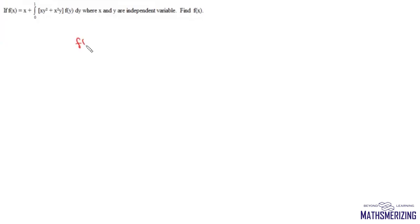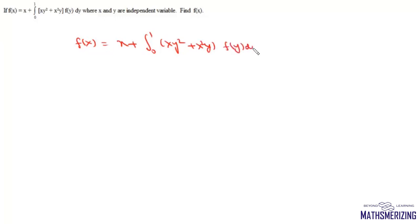The question gives us a function f(x) equals x plus the integral from 0 to 1 of (xy² + x²y)f(y) dy, where x and y are independent variables. We have to find f(x).